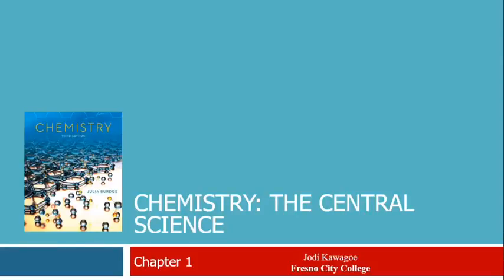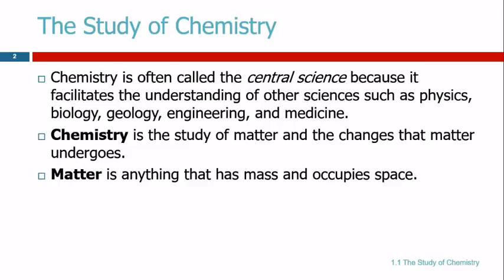Chapter one is entitled The Central Science. Chemistry is called the central science because it really helps us to understand all of the other sciences. Biology, physics, geology, medicine, genetics, all sorts of other sciences require some understanding of chemistry. That's one of the reasons we get so many people in chemistry class who don't like chemistry — they want to study biology. But the chemistry is going to help you understand biology. So it's an important science.